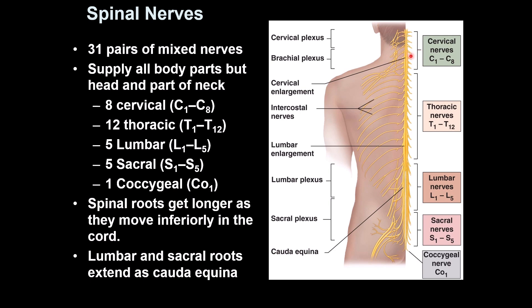The first part is the cervical area, C1 to C8, so you have eight nerves there. Then the thoracic area, T1 to T12, so you have 12 of them. Lumbar has five, sacral has five, and coccygeal has only one.